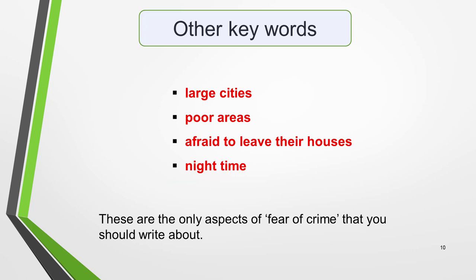The other keywords in the question tell you the specific topic you must write about and define the opinion stated in the statement. Isolated from the statement, these are: large cities, poor areas, afraid to leave their houses, and night time. These are the only aspects of fear of crime that you should write about. Do not write about crime or fear of crime in general, or you'll be given a low mark for task achievement.